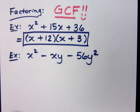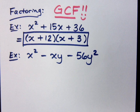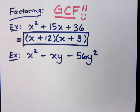Let's try this one: x squared minus xy minus 56y squared. Is there a common factor for everybody? No. So then I look at the number of terms — it tells me what to do. I've got three terms, so two binomial factors. That's all we've got to do.